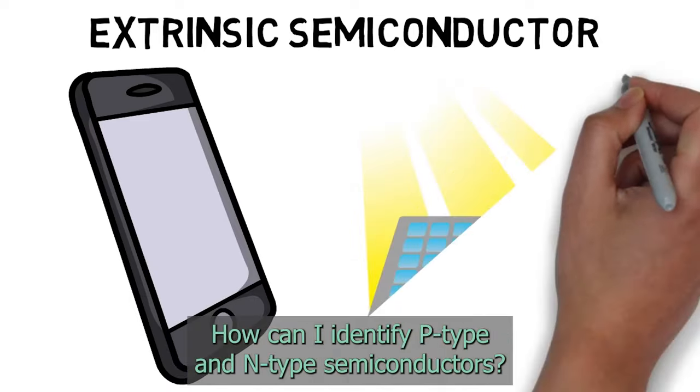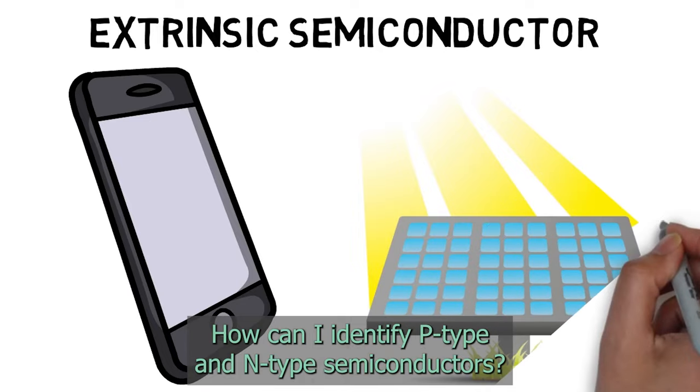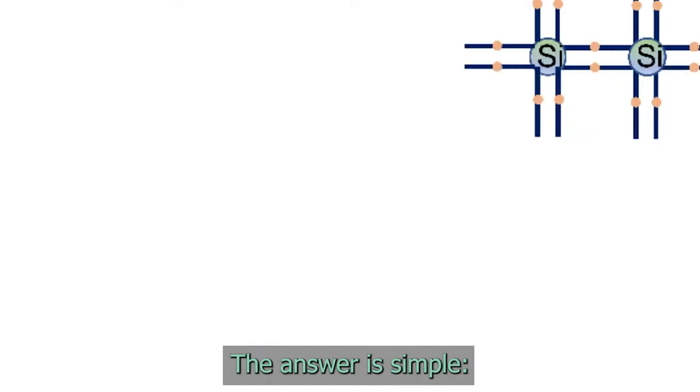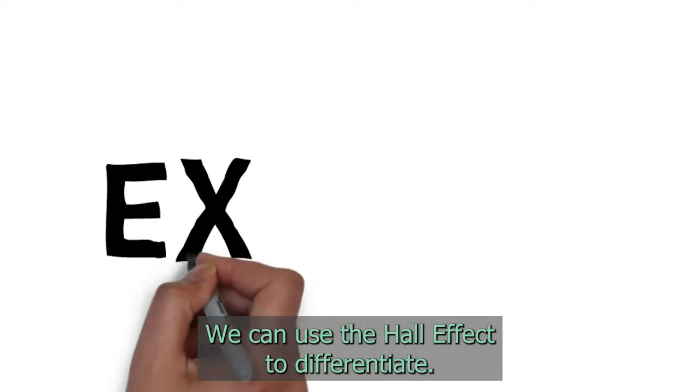Let's come back to our question. How can I identify P-type and N-type semiconductors? The answer is simple. We can use the Hall effect to differentiate.